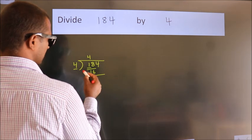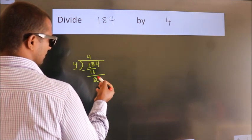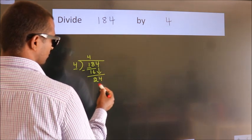Now we should subtract. We get 2. After this, bring down the beside number. So, 4 down. 24.